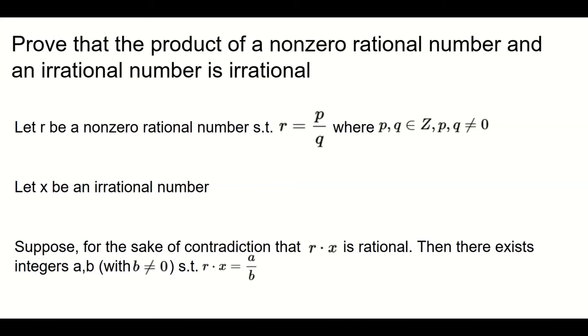If Q is zero, then we can't divide by zero. If P is zero, then that means it's a zero rational number, which we said it has to be non-zero. So both P and Q have to be non-zero, and then we'll let X be the irrational number.